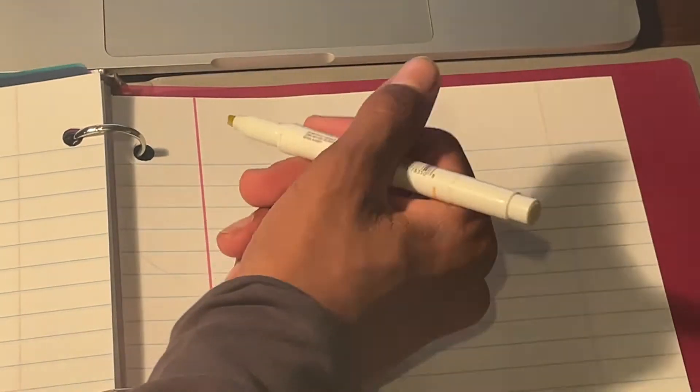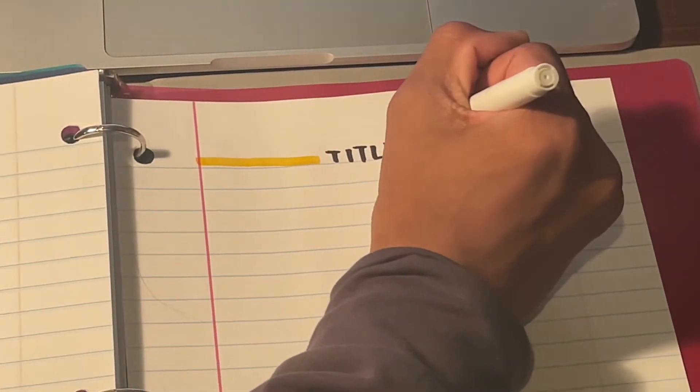Next, you're going to take your highlighter and draw two horizontal lines forming two bars around your title.